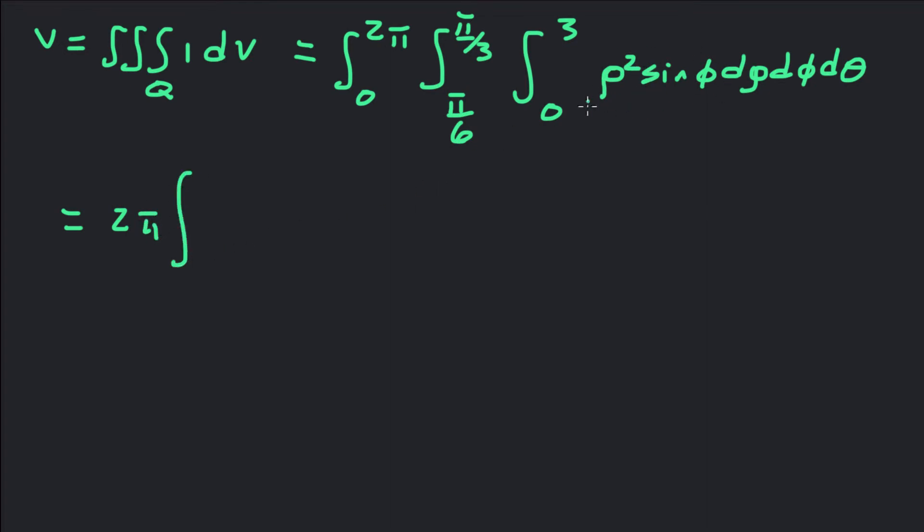This is a nice product of integrands, so we can separate this into ∫(π/6 to π/3) sin φ dφ times ∫(0 to 3) ρ² dρ.